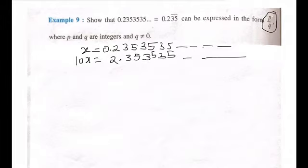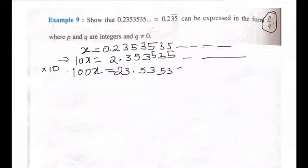Now, you can see the decimal part of both of them is different. So what we will do, we will again multiply it with 10. So we are going to multiply this with 10 again. It will be 100X is equal to 23.53535.